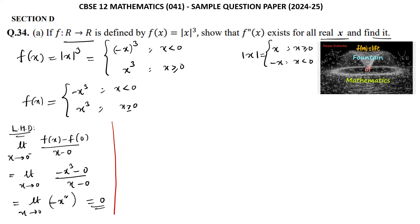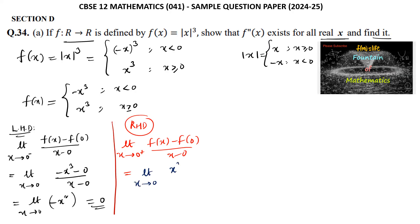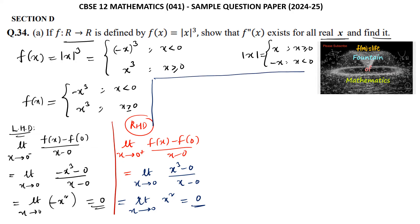Similarly, the right-hand derivative: limit as x tends to 0⁺ of [f(x) - f(0)] / (x - 0). Since x > 0, f(x) = x³, so this becomes limit of x³ / x = x², which equals 0 as x tends to 0. So the left-hand derivative equals the right-hand derivative at x = 0.